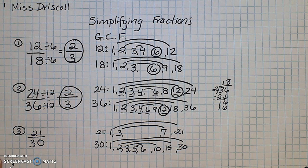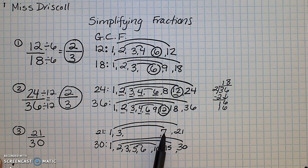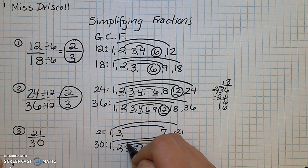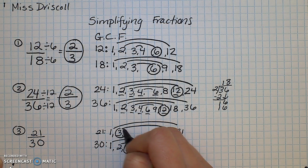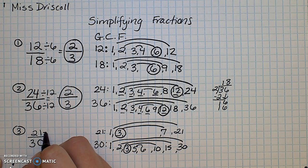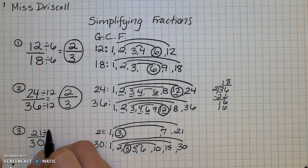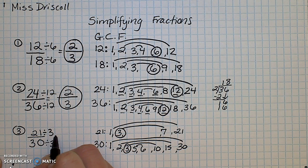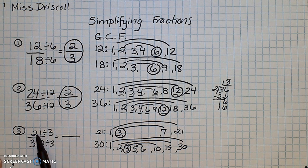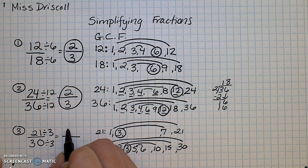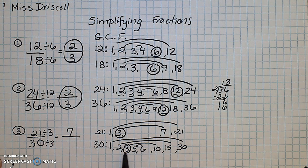So I'm going to find the numbers I have in common. They have 3 in common — no 7s, no 21s. So there's only one number they have in common: it's 3. I divide both numbers by 3. Use your rainbow: 21 divided by 3 — 3 is paired with 7, so that's 7. And 30 divided by 3 — 3 is paired with 10, so that's 10. The simplified answer is 7/10.